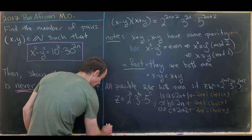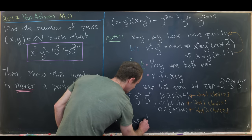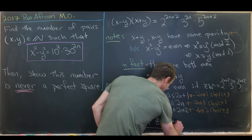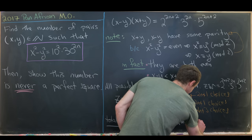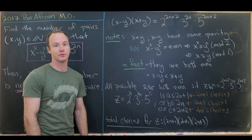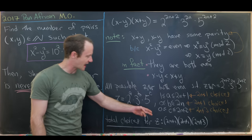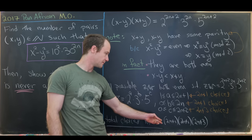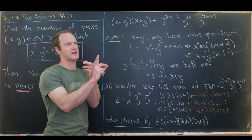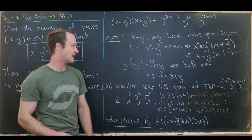By the multiplicative principle, the total number of choices for the factorization pair is (2n+1)(2n+1)(2n+3). However, this allows z to be larger than w. Since our right-hand side is a perfect square, there is exactly one factorization where z equals w, meaning the total number of ordered pairs with z less than w is this number minus 1, divided by 2.